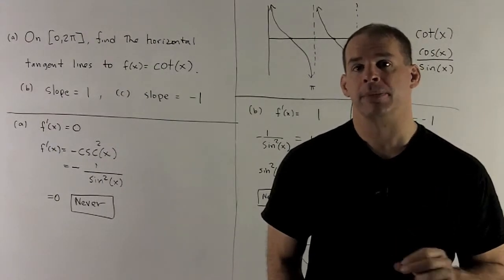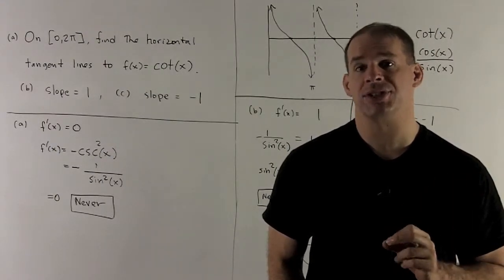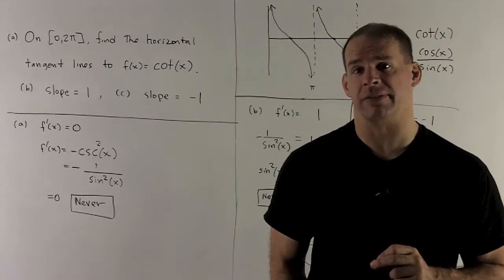On the interval from 0 to 2 pi, find all horizontal tangent lines to the function f of x equal to cotangent of x.